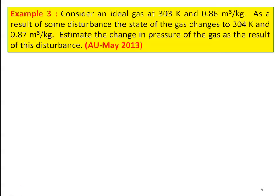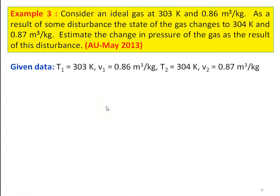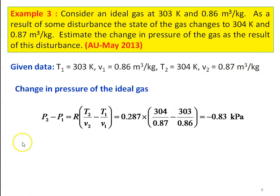In example number 3, consider an ideal gas at 303 Kelvin and 0.86 meter cube per kilogram. As a result of some disturbance, the state of the gas changes to 304 Kelvin and specific volume 0.87 meter cube per kilogram. Estimate the change in the pressure of the gas as a result of the disturbance. So T1 equal to 303 Kelvin, V1 equal to 0.86 meter cube per kilogram, T2 equal to 304 Kelvin, V2 equal to 0.87 meter cube per kilogram. P2 minus P1 equal to R into (T2/V2 minus T1/V1). Substituting R equal to 0.287 (for air): 304 divided by 0.87 minus 303 divided by 0.86 equal to minus 0.83 kilo Pascal. So this is the answer to the problem.